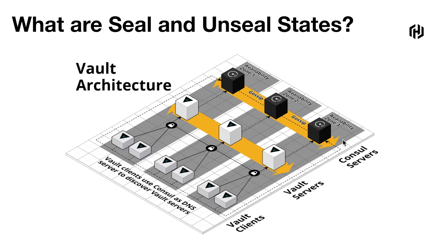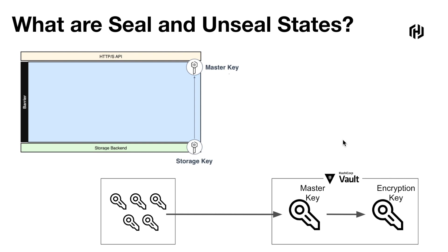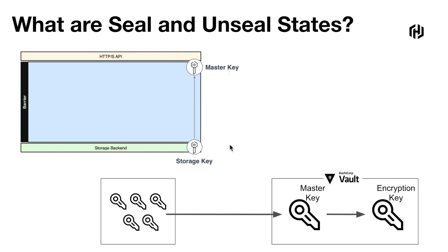The only possible operations are to unseal the vault and check the status of the seal. You might ask why unsealing is needed: the data stored by vault is encrypted, and vault needs the encryption key in order to decrypt the data. Here you can see the topology of the vault — you access vault information through API, CLI, or UI — and no information leaves vault in unencrypted form to its storage backend. So we want to find out how we get the storage key.